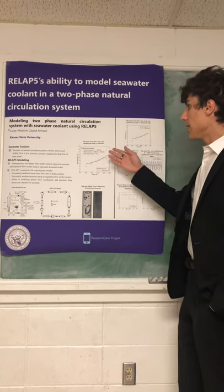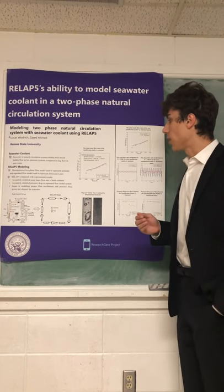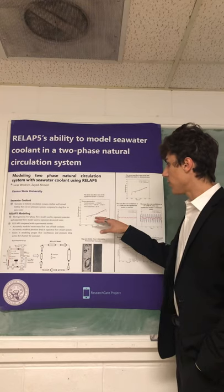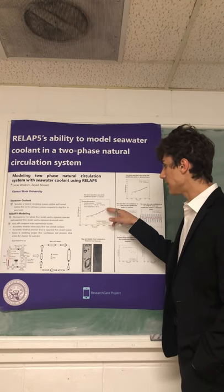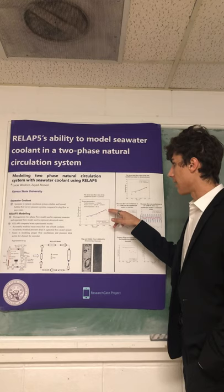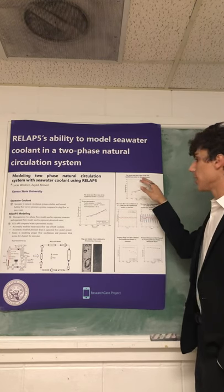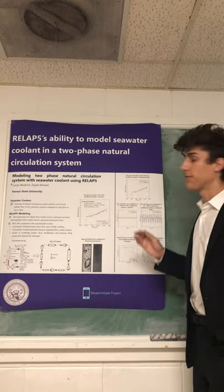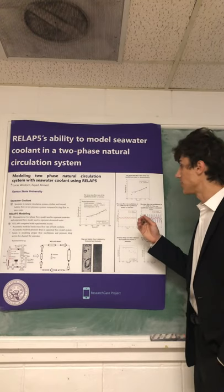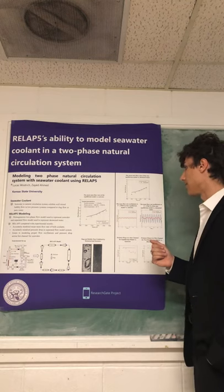When looking at the mean mass flow rate of the equilibrium model versus the seawater, we noticed quite good agreement between the modeled blue line data and the red squares of the experimental data. This also held true for the non-equilibrium model versus the deionized water case for mean mass flow rates, where the RELAP model is in blue and the experimental data is in red.